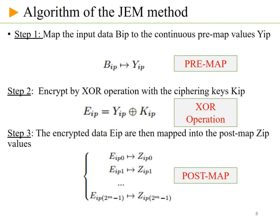The digital algorithm of the GAM method is executed in three steps: the first step is the pre-map, the second step is the XOR operation, and the third step is the post-map.